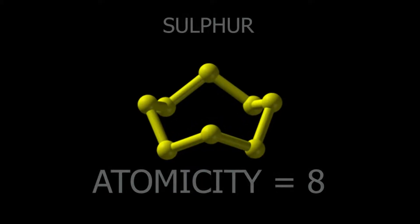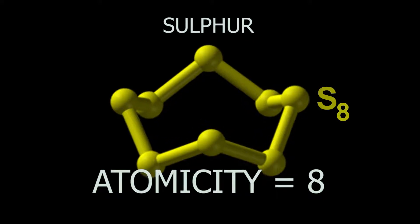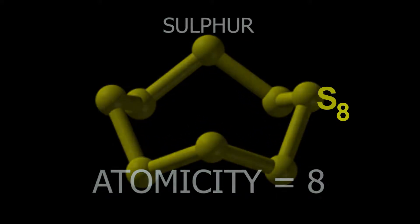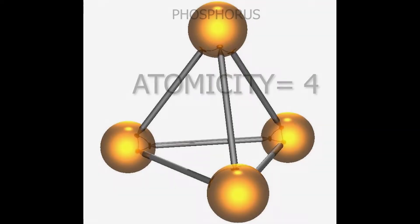Atomicity of sulfur element is 8 as it exists as S8. Atomicity of phosphorus is 4 as it exists as molecule of elements and its chemical formula is P4.